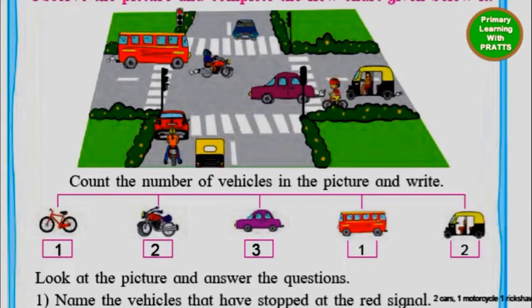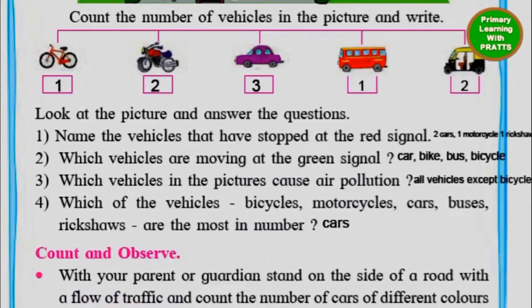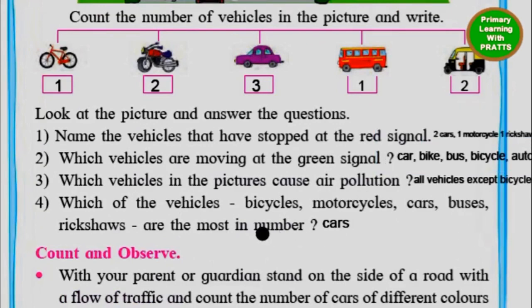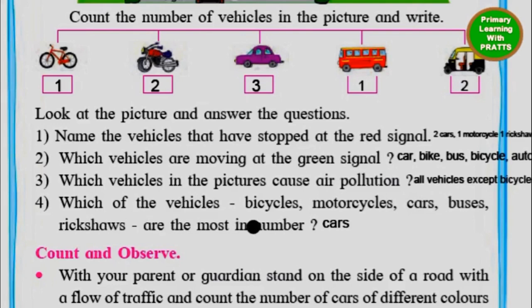Which vehicles in the picture cause air pollution? Remember, all vehicles that run on diesel, petrol, or even CNG — though lesser — still cause air pollution because they throw up smoke. The vehicle that will not cause any air pollution is the bicycle. So all vehicles except the bicycle cause air pollution.